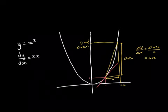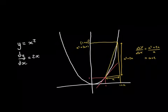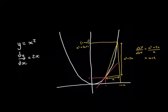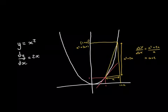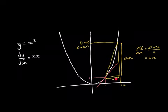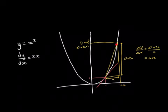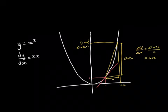Now we're going to step it up significantly. Rather than setting the change in x to a specific number, we're going to create a formula for the gradient of the secant line for a general delta x, which we'll call a. We imagine going forward a general amount a to the point 1+a, and ask what is the gradient of the secant line between the point (1,1) and the point (1+a, (1+a)²).